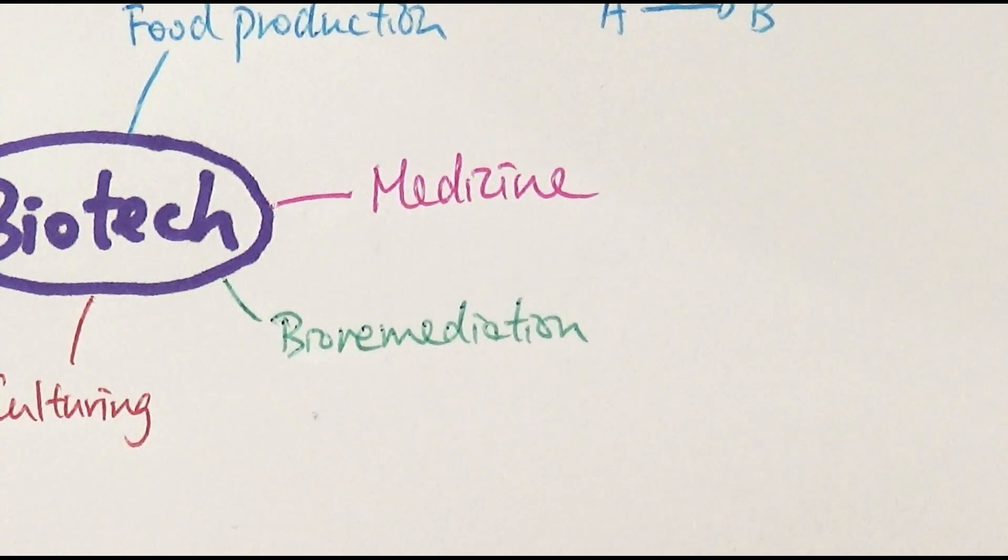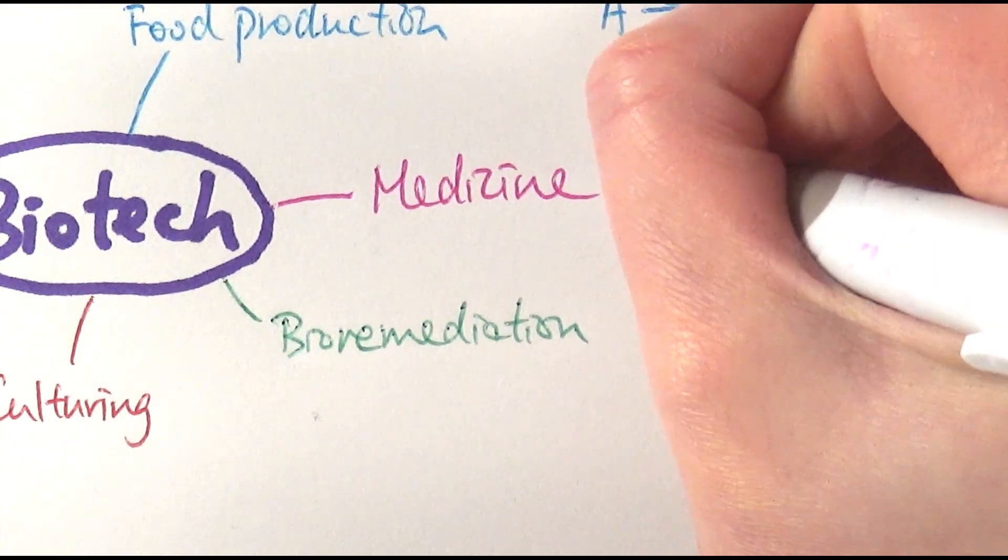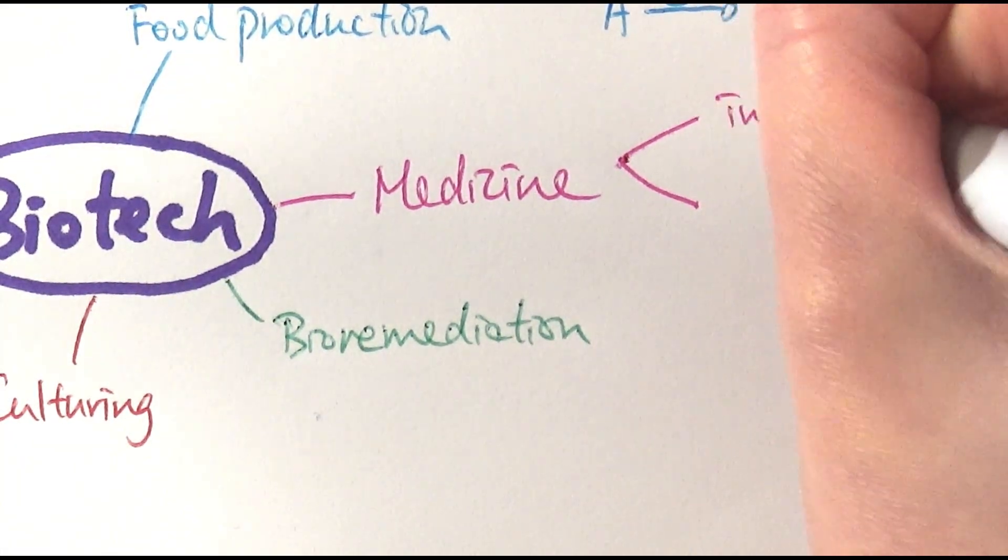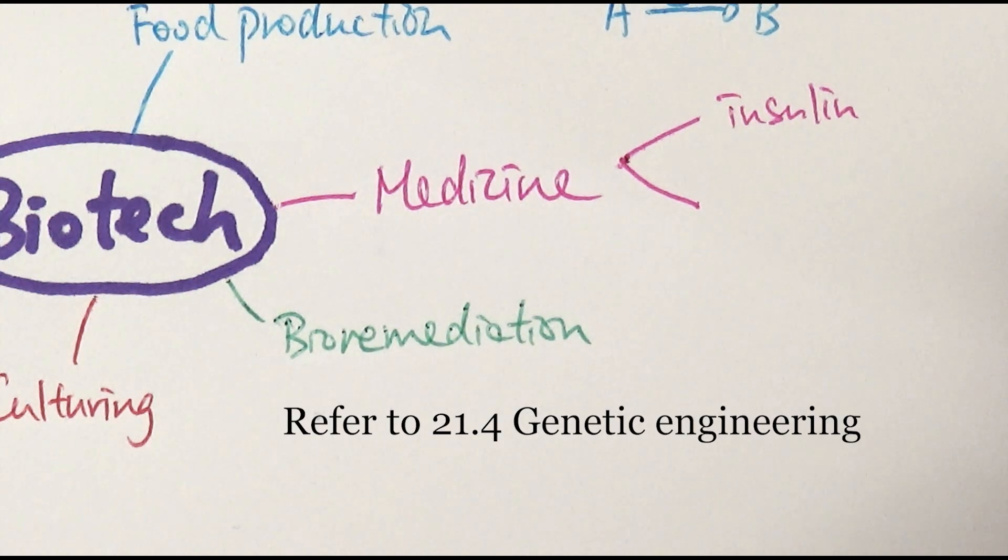In terms of medicine, without going into masses of detail, there are two specific examples you need to be aware of. One is insulin. You've learned a lot about genetically engineering bacteria to make insulin. That's the classic example.